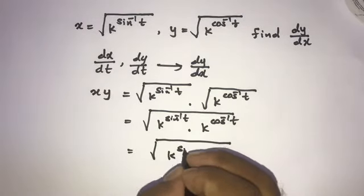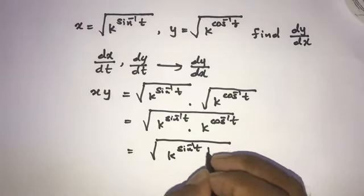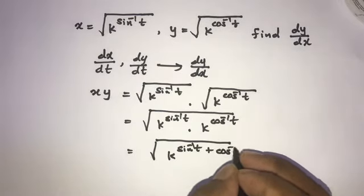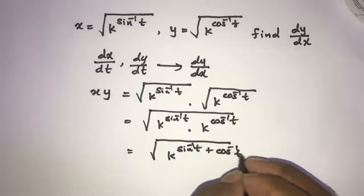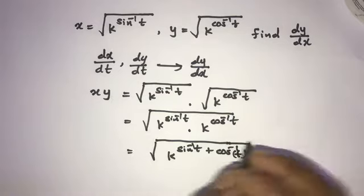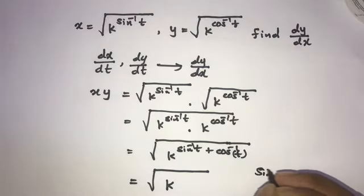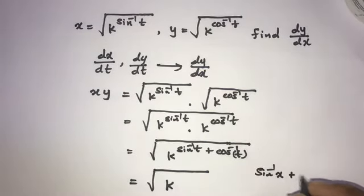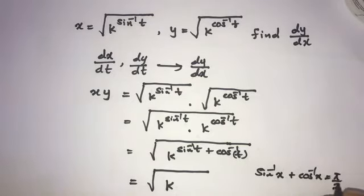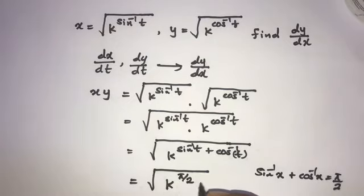So k to the inverse sine of t plus inverse cosine of t. Now we know sine inverse x plus cosine inverse x equals 5 over 2, so this is k to the 5 over 2.